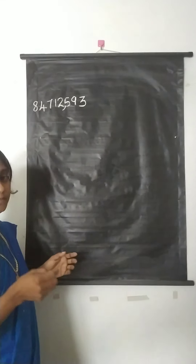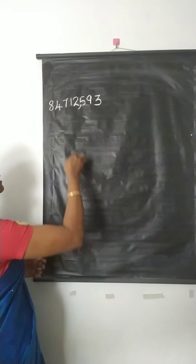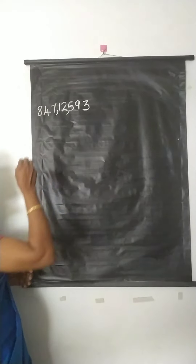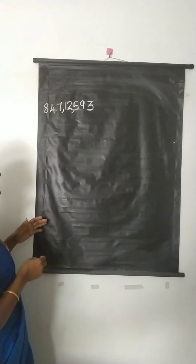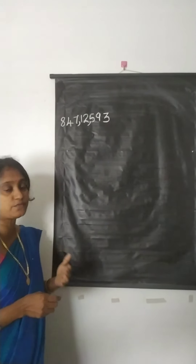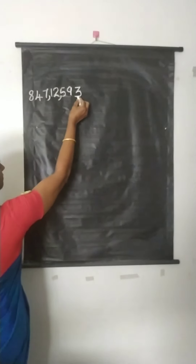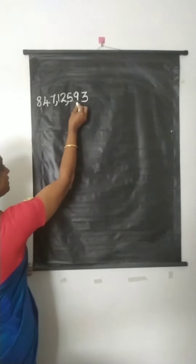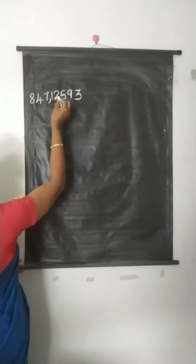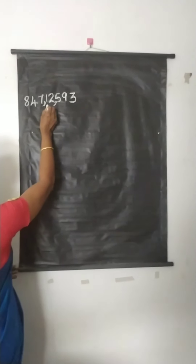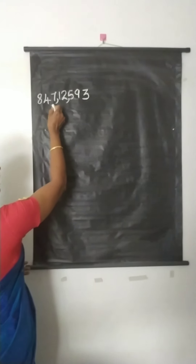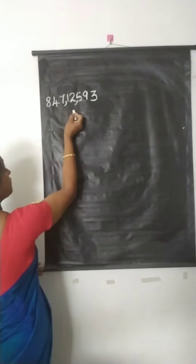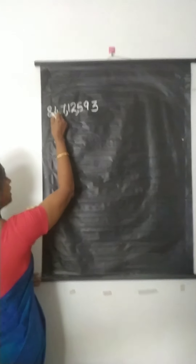The second comma comes in between 7 and 1 — that is, after 5 digits from the right, we put the next comma. The third comma comes after 7 digits from the right. Counting from the right: 3, 9, 5, 2, 1, 7, 4 — the seventh digit is 4. Therefore, the next comma comes in between 8 and 4.